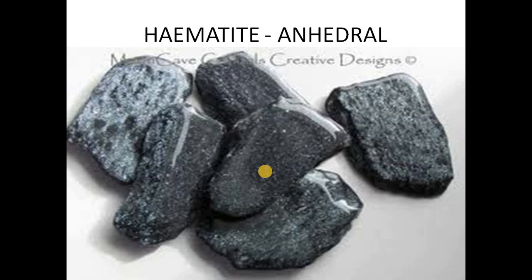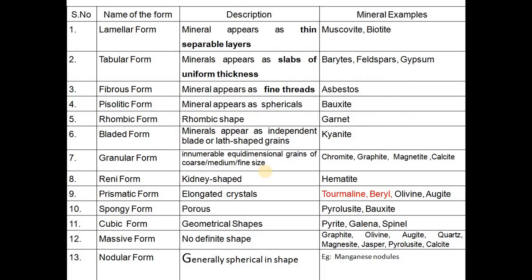Hematite has no proper face at all, so we can say hematite mineral is anhedral in this case. Some forms with examples are mentioned in the table. Lamellar form is the best example for muscovite and biotite. The meaning of lamellar form is that the mineral appears as thin separable layers — each layer can be removed very easily. That is why it is called lamellar form.